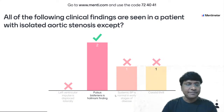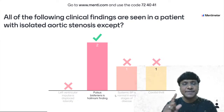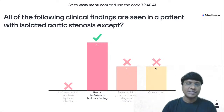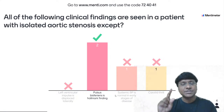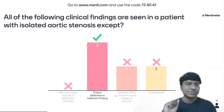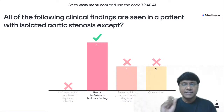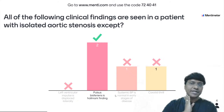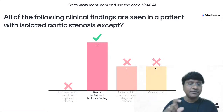Left ventricular impulse displaced laterally is a correct statement in aortic stenosis. Systolic blood pressure is normal in early stages of disease — correct. Systolic blood pressure is reduced only in very severe stages of aortic stenosis. Carotid thrill is also present — the murmur of aortic stenosis can be found over the carotid artery, which is called the carotid thrill.